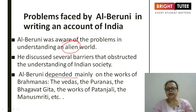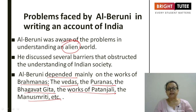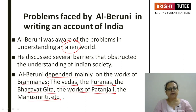He depended mainly on the works of Brahmans — the Vedas, Puranas, Bhagavad Gita, the works of Patanjali, and Manu Smriti. He considered mainly the works of Brahmans. We have four Vedas in Hindu religion: Rig Veda, Sam Veda, Yajur Veda, and Atharva Veda.